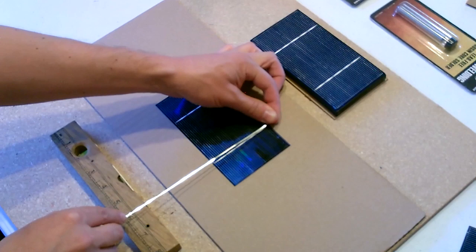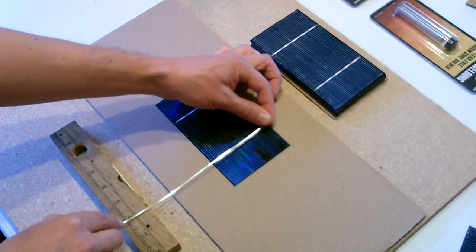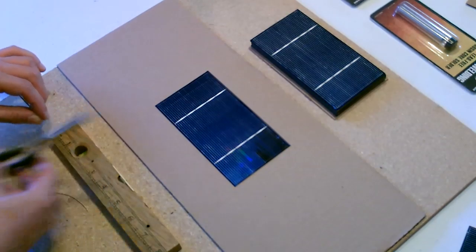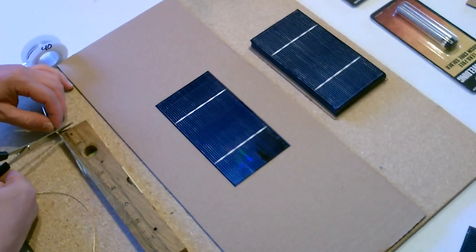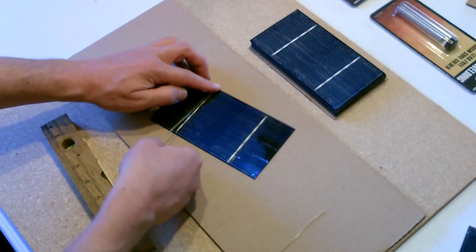And then you want to cut two lengths of tabbing wire that are twice as wide as the panel. So the panel is three inches wide. We'll cut two 6-inch sections. One, two. Put one of these wires there.